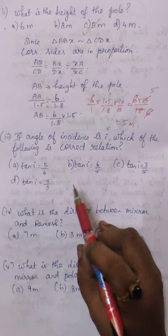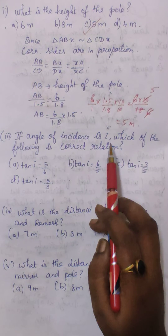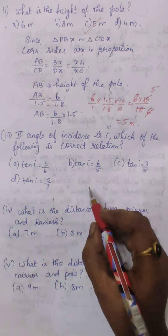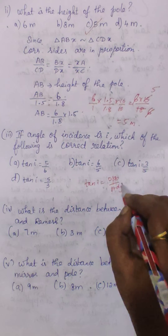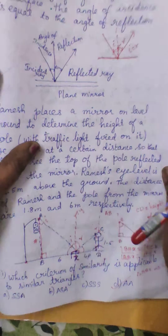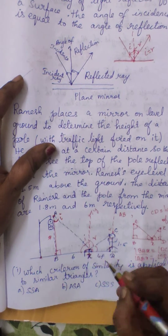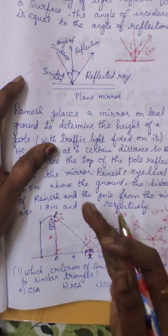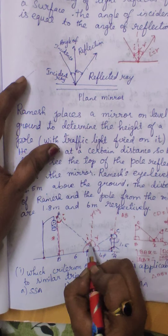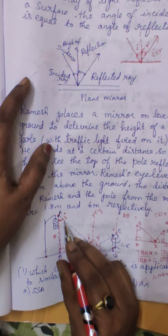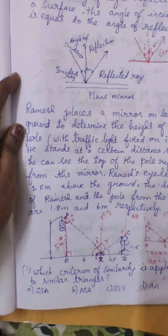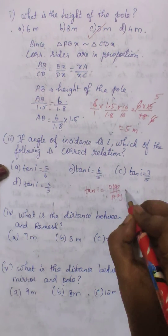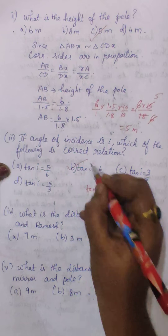Moving on to the third question: if the angle of incidence is I, which of the following is the correct relation? We know tan I represents opposite over adjacent. Here the angle of incidence I is the same as angle A. Tan I equals opposite over adjacent. A, B is 5 meters, so tan I equals 6 by 5. Option B is the correct answer.